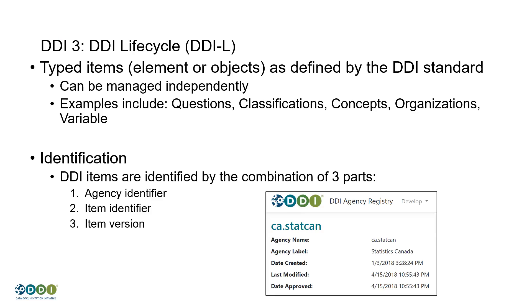When you think about reusing metadata wave after wave, cycle after cycle of data collection, you can imagine a system that provides that metadata for reuse and management. For Stats Canada, that is the Colectica repository. But the key to it is identification. The identifiers in DDI are made up of three parts: an agency identifier — the organization responsible for creating and maintaining the metadata — an item identifier for each little bit of metadata, and a version field.